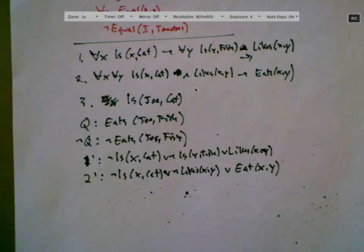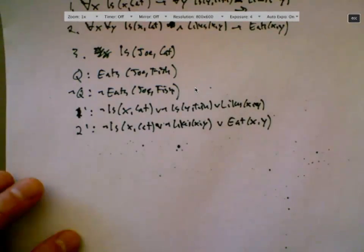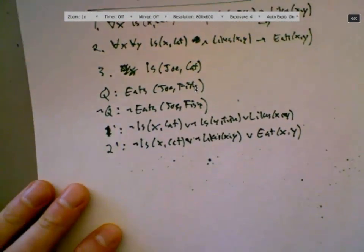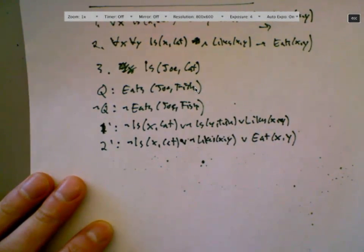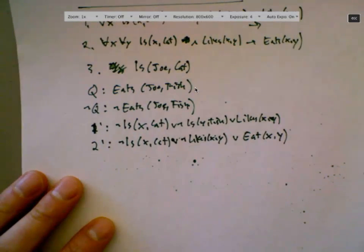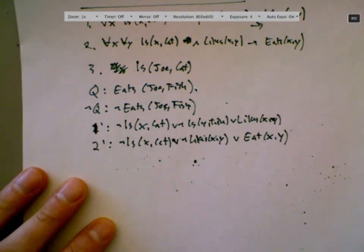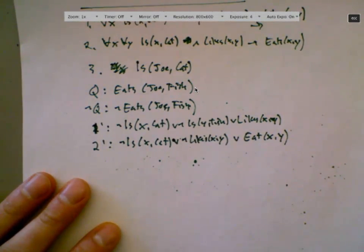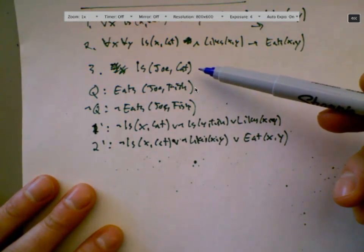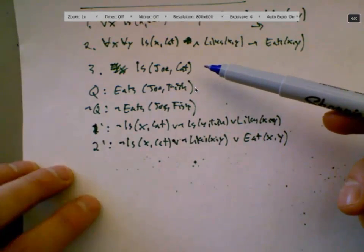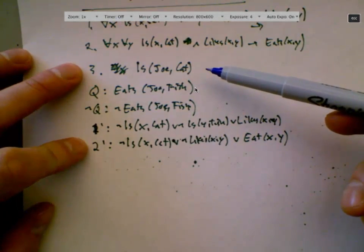Who wants to tell me the next step? I think we should write down eats joe fish into something more likely to have to do it. Eats joe fish? It is joe, cat. So do resolve two and three together?